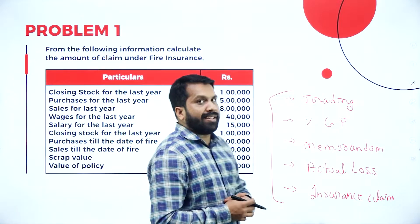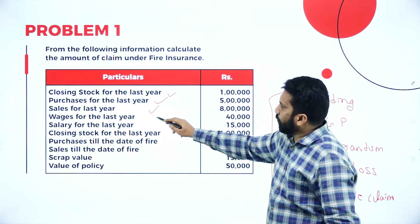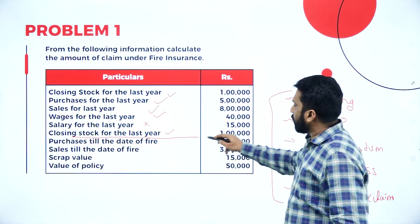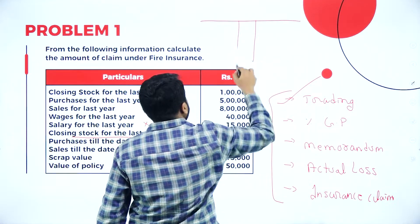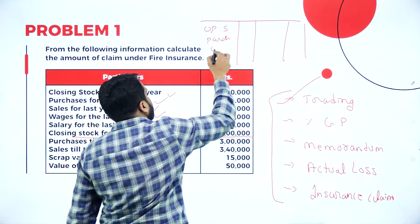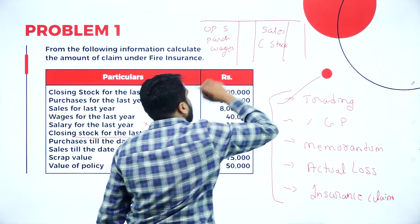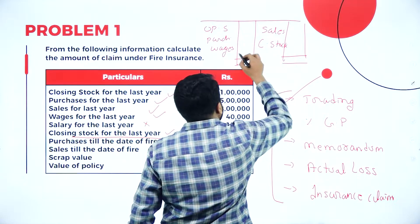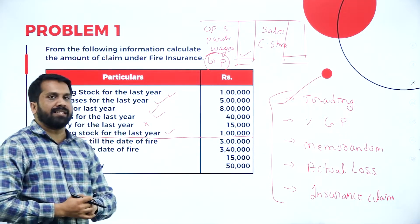Under the trading account, anything related to the previous year or last year — like closing stock, purchases, sales, wages — note that salary is not part of your trading account. The closing stock for the last year becomes the opening stock for the current year. In the trading account format, the debit side has opening stock, purchases, and wages. The credit side has sales and closing stock. The difference between the two sides is called your gross profit.